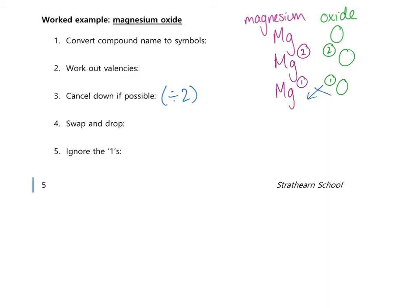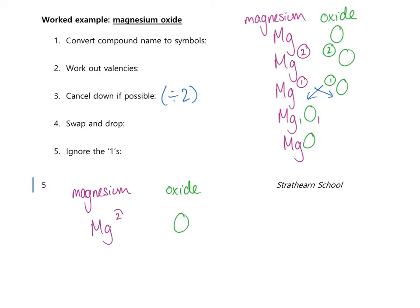Step four is swap and drop. Swapping the same number doesn't change much here, but writing it in gives us Mg1O1. Then the last step is to ignore the ones, which gives us MgO. In summary: symbols Mg and O, valencies two and two, cancel down to one to one, swap and drop gives Mg1O1, ignore the ones gives MgO. In magnesium oxide, for every one magnesium there is one oxygen.